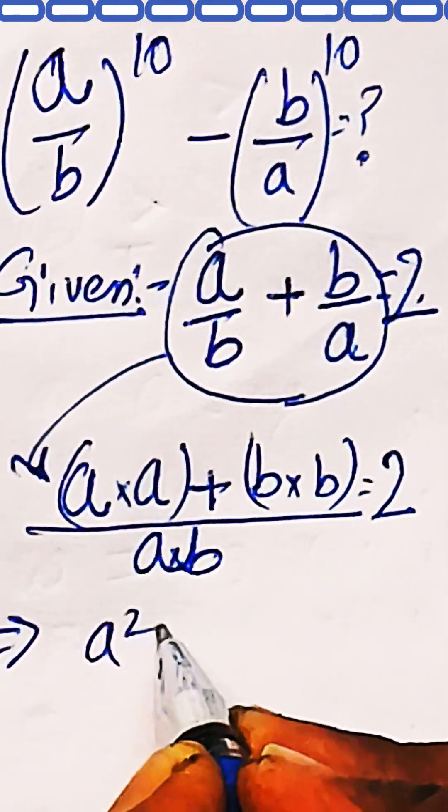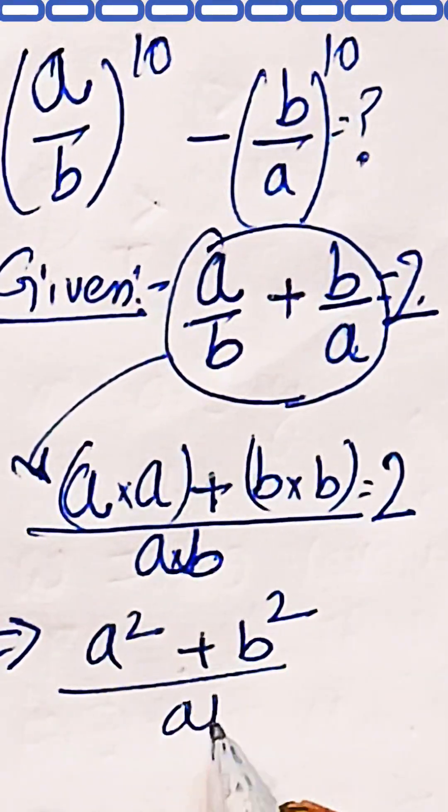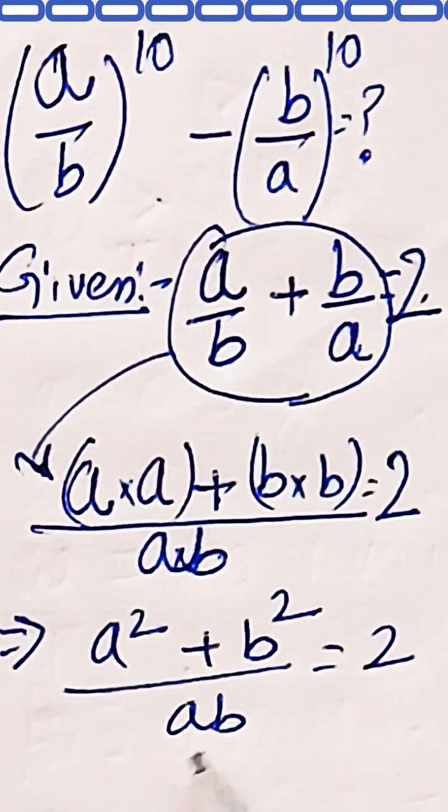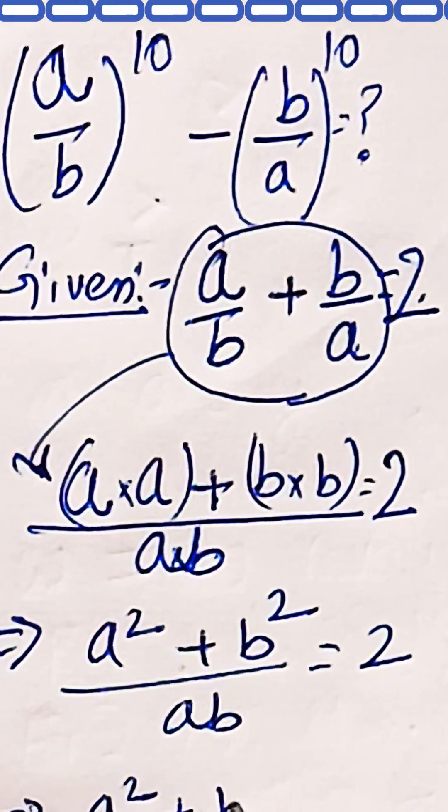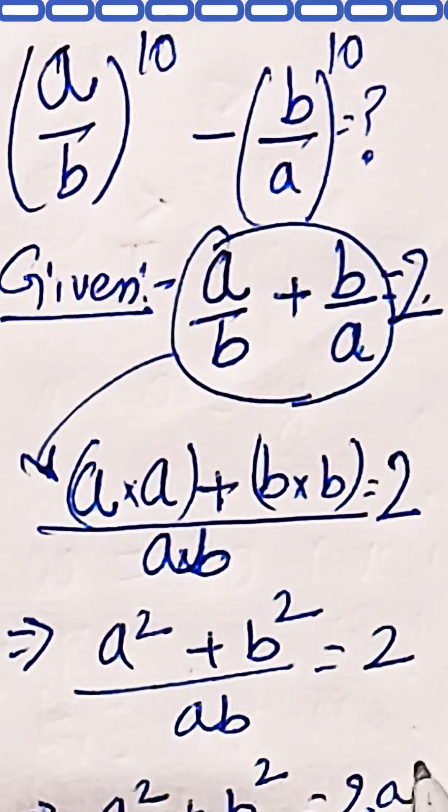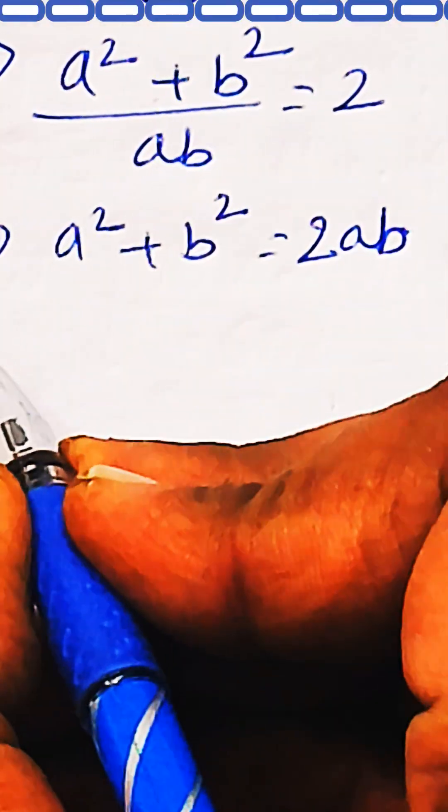Same base powers will add. So a times a will be a squared. Similarly, b and b multiplied becomes b squared divided by ab equals 2. Now just do the cross multiplication. Then we can say that a² plus b² is equal to 2 times ab.